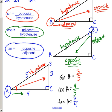These three definitions — sine, cosine, tangent — need to be memorized. There's a mnemonic word that might help: SOH-CAH-TOA. SOH tells you sine is opposite over hypotenuse, CAH tells you cosine is adjacent over hypotenuse, and TOA tells you tangent is opposite over adjacent. If you know those three definitions and can identify the sides on a right triangle, you can find the sine, cosine, and tangent of any angle.